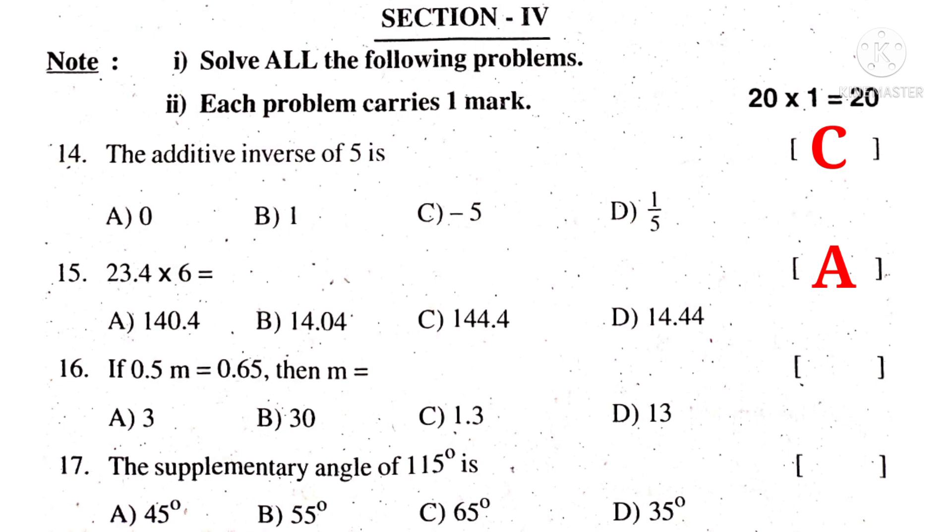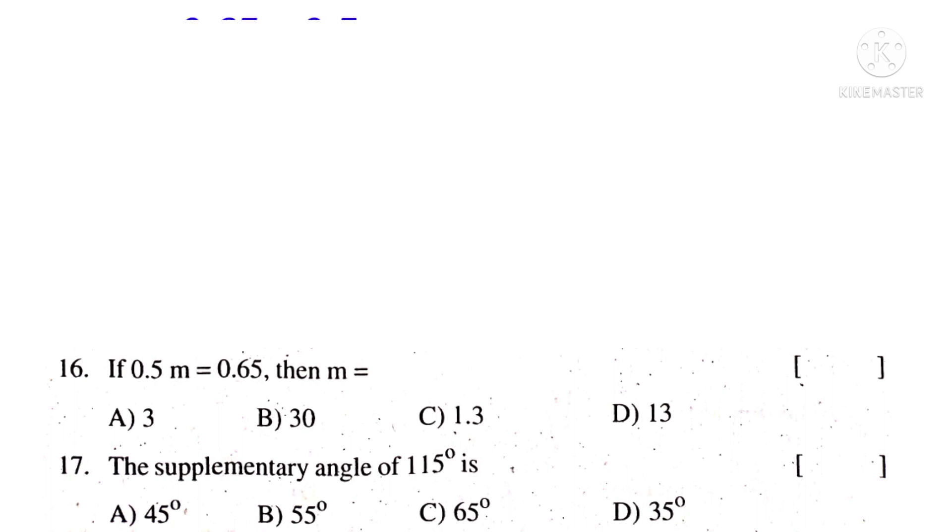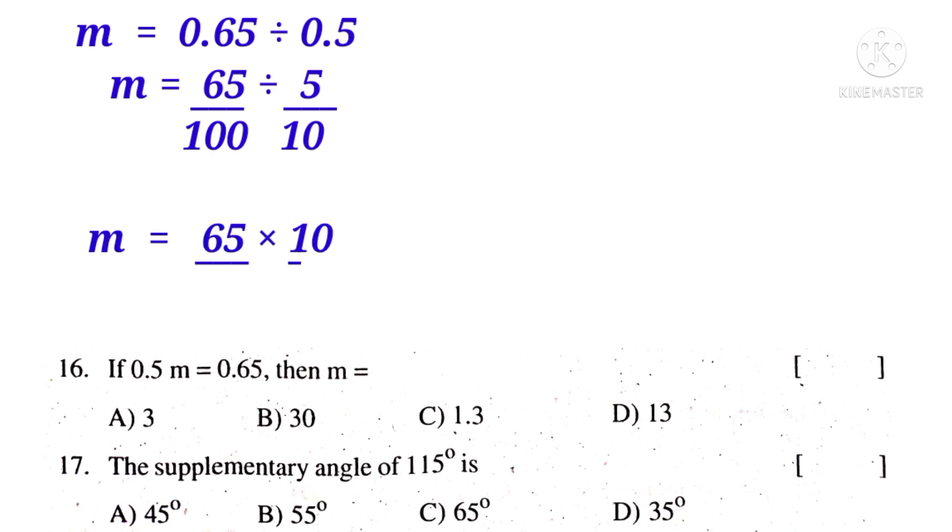Now 16th. If 0.5M is equal to 0.65, then M is equal to 0.65 divided by 0.5, which can be written as 65 by 100 divided by 5 by 10. That is equal to 65 by 100 into 10 by 5, reciprocal of 5 by 10. On simplification by 10, 10 times. On simplification by 5, 5, 13 times. That is equal to 13 by 10, which is equal to 1.3. So the correct choice is C.